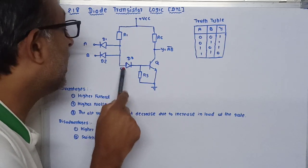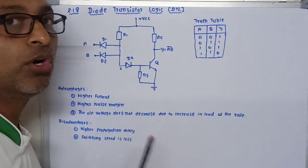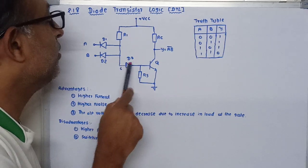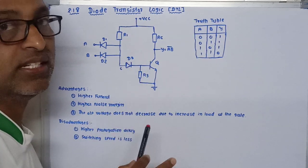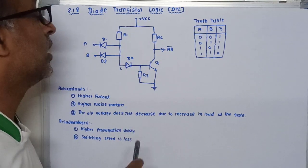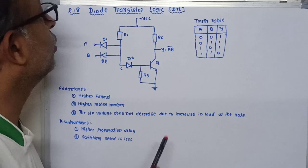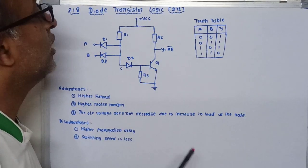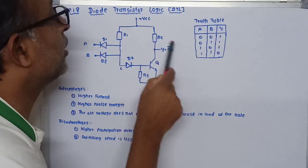The potential available at point C is not sufficient to flow current through the diode and transistor. So in this case, the transistor remains in off-state condition. The supply voltage VCC is available at the output terminal of the collector of transistor Q1.